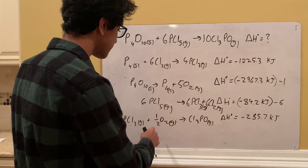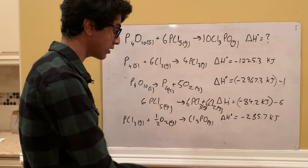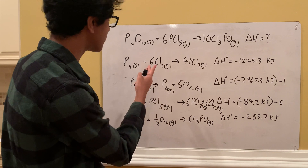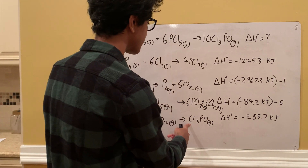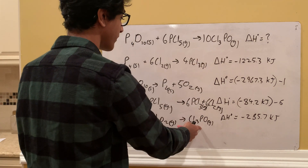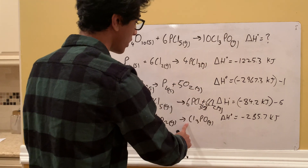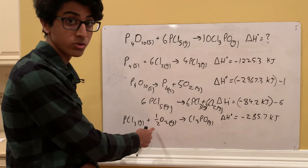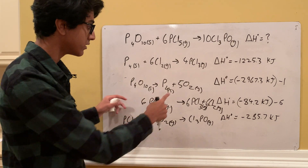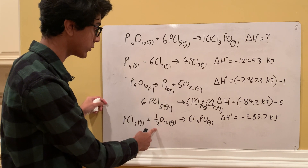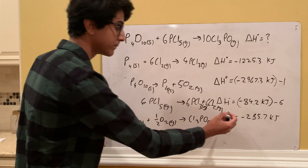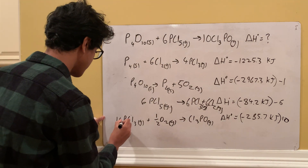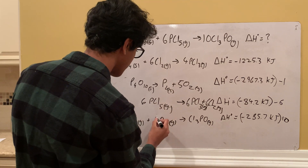The final given reaction is PCl3 plus one-half O2 gas goes to Cl3PO. PCl3 and O2 don't appear in the target, but Cl3PO shows up on the right side — that's correct. There's a 10 in the target and only a 1 here, so we must multiply by 10. Multiplying by 10 also creates 5O2, which can cancel with the 5O2 from the reversed reaction 2. So we multiply this reaction by 10, giving 10PCl3 plus 5O2 goes to 10Cl3PO.